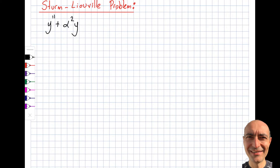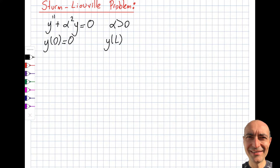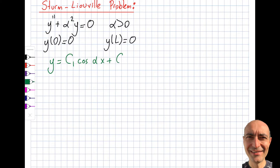Let's start with a specific ODE. You can clearly see that this is an ODE, it is homogeneous, and it is linear. The boundary value problem has conditions: y(0) = 0 and y(L) = 0. I will not solve it in detail — the general solution looks like C1 cosine(αx) + C2 sine(αx). The trivial solution where C1 = 0 and C2 = 0 satisfies this, giving y = 0, but that is not particularly useful.